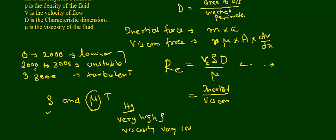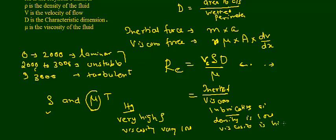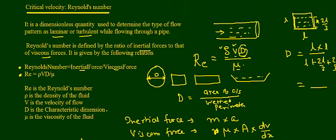As compared to mercury, lubricating oil has a much lower density but higher viscosity. So density and viscosity are not directly related. This interesting relationship between the two gives rise to the concept of Reynolds number, which helps us identify whether a flow is laminar or turbulent.